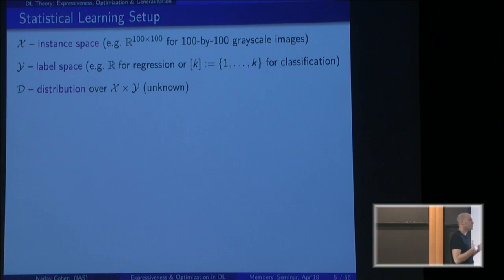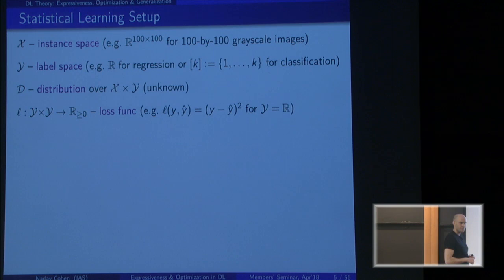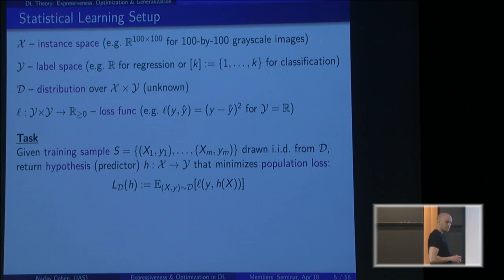There is some distribution over labeled instances — some distribution over image-label pairs. We don't know this distribution, but we assume it exists. There is also some loss function — a function that takes two labels and outputs a non-negative number saying to what extent they deviate from one another. If the labels are continuous, a reasonable measure would be just the squared difference.